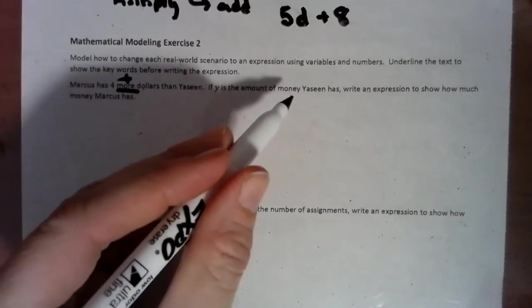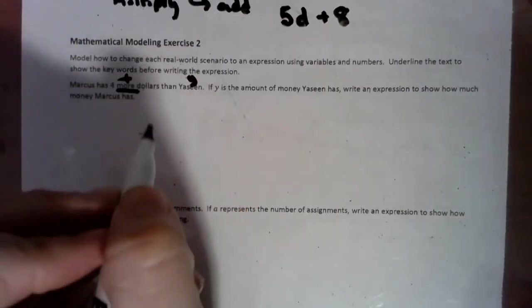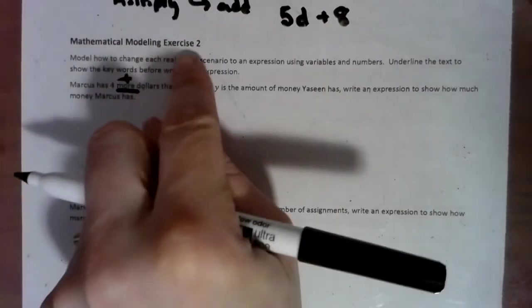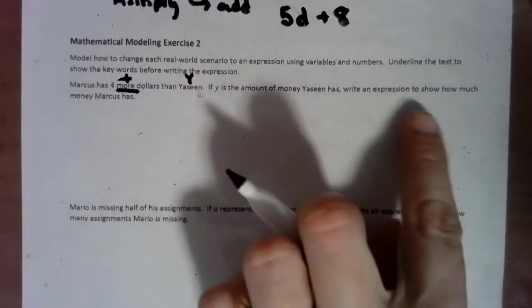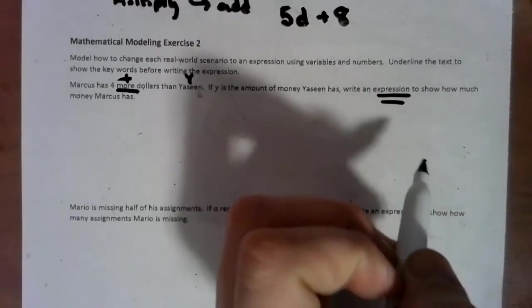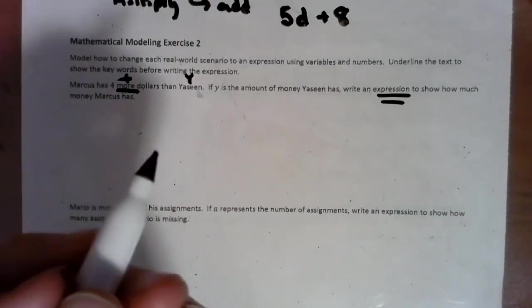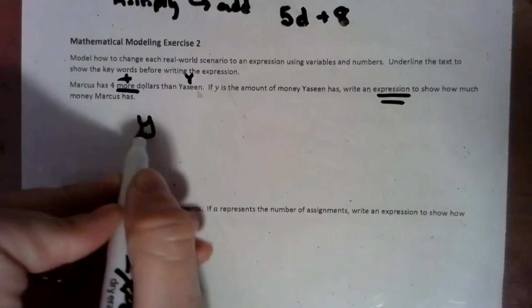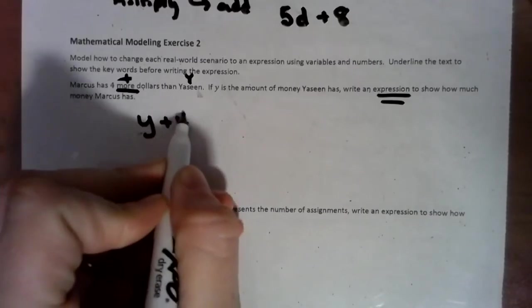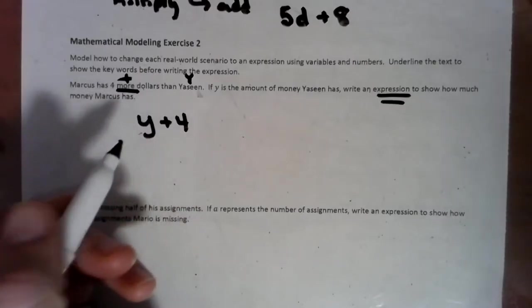If Y is the amount of money Yassine has, I'm going to put a Y above his name. So if Y is the amount of money Yassine has, write an expression. Remember, the key thing about an expression is it does not have an equal sign. Marcus has four more dollars than Yassine, so we have Y, and Marcus has four more than he has. So the expression is Y + 4.